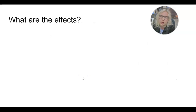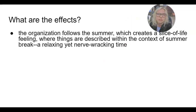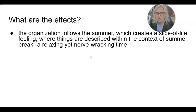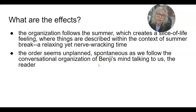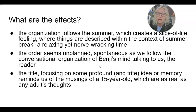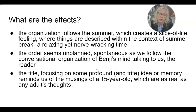Looking for connections between what's happening in the flashbacks and what's happening in the current timeline is going to be key to understanding the book. The effects of the episodic structure: the organization follows the summer, giving us a slice-of-life feeling — experiencing one summer in one teenager's life in one place. The order seems unplanned and spontaneous, as we follow the conversational organization of Benji's mind. The title of each chapter focuses on something both profound and trite, like notions of infinity in a roller rink — a memory reminding us of the musings of a 15-year-old, which are as real as any adult's thoughts but grounded in a teenager's life.